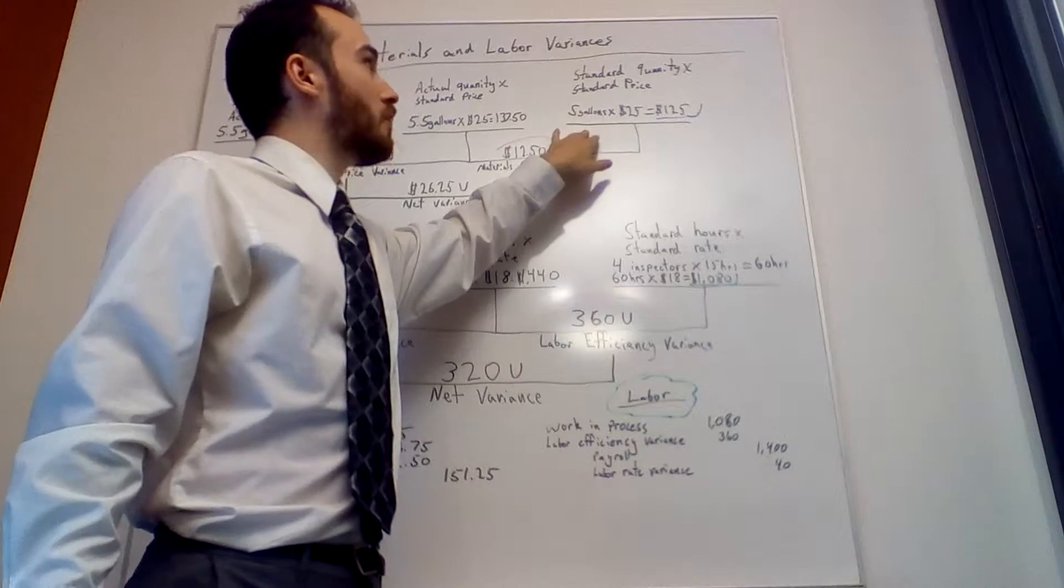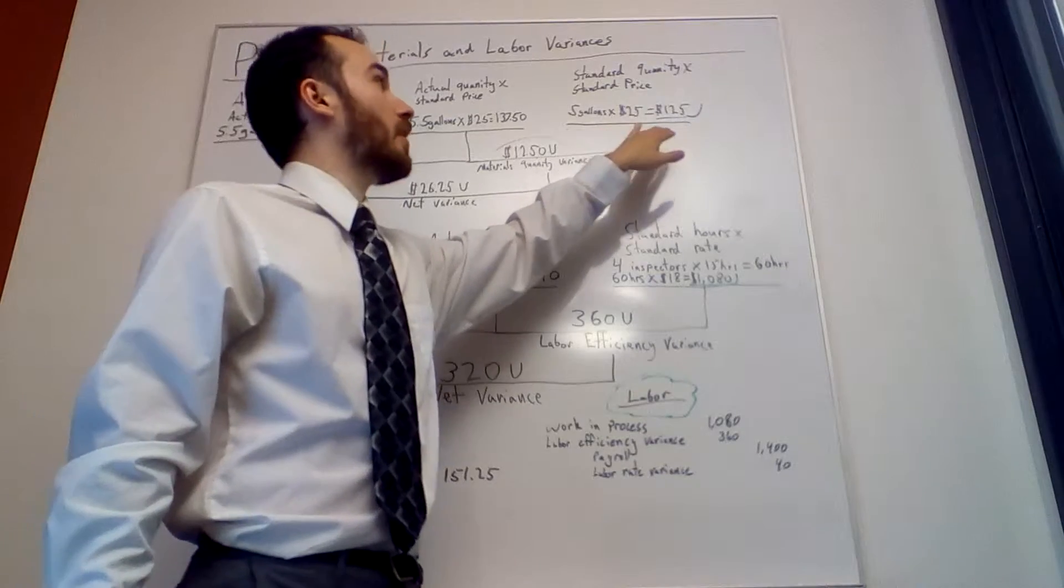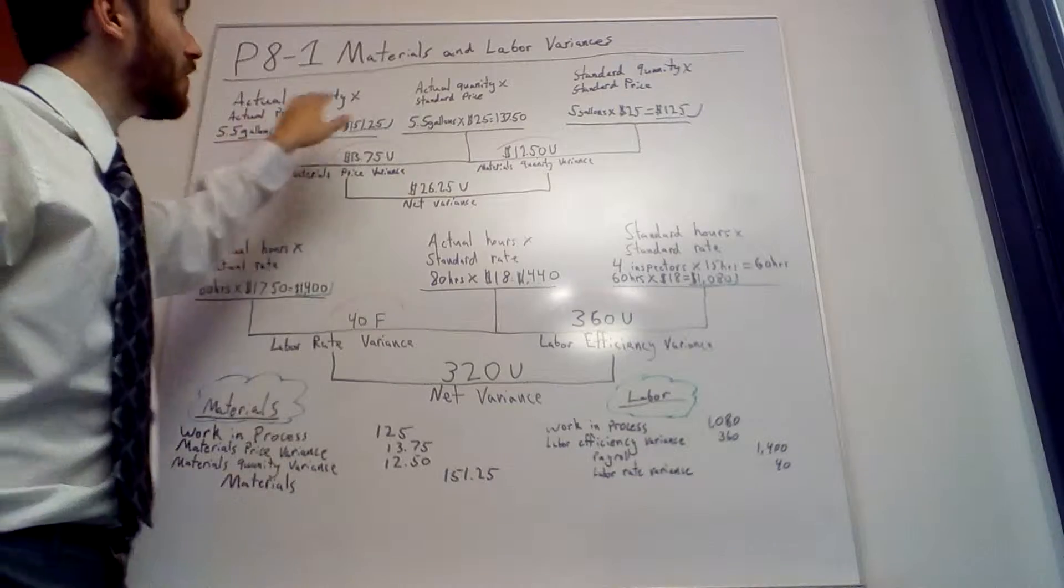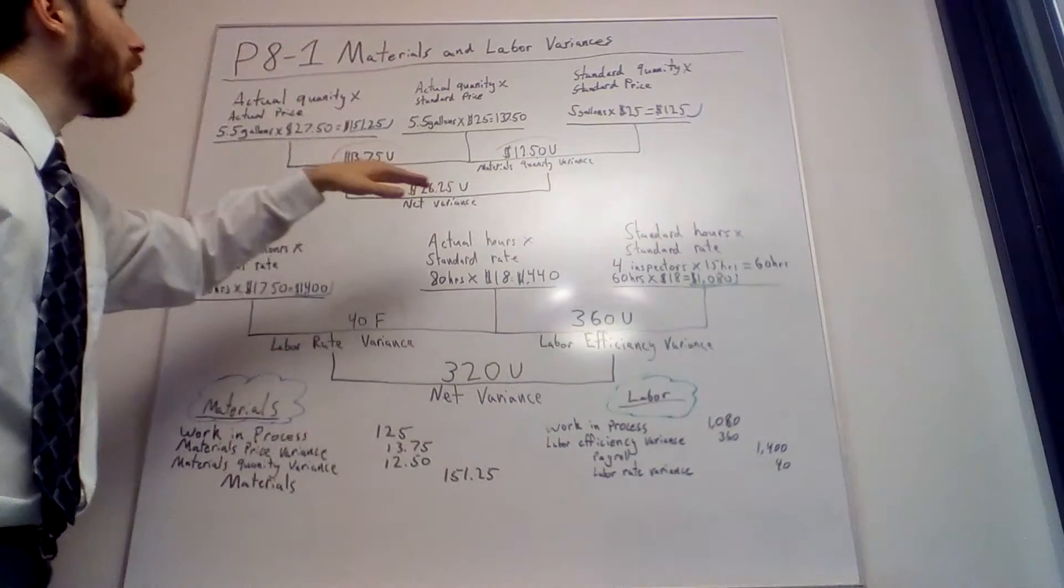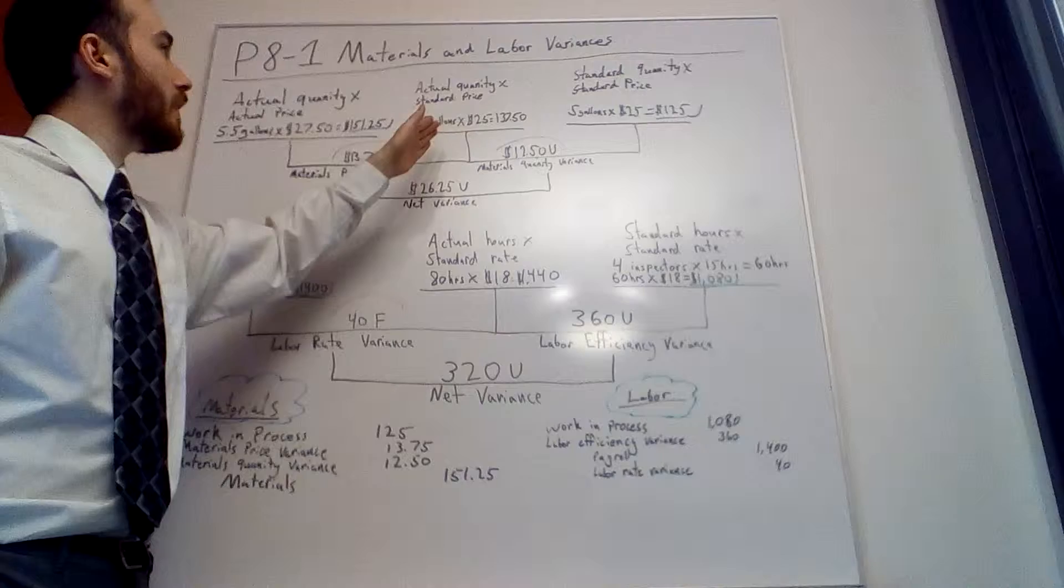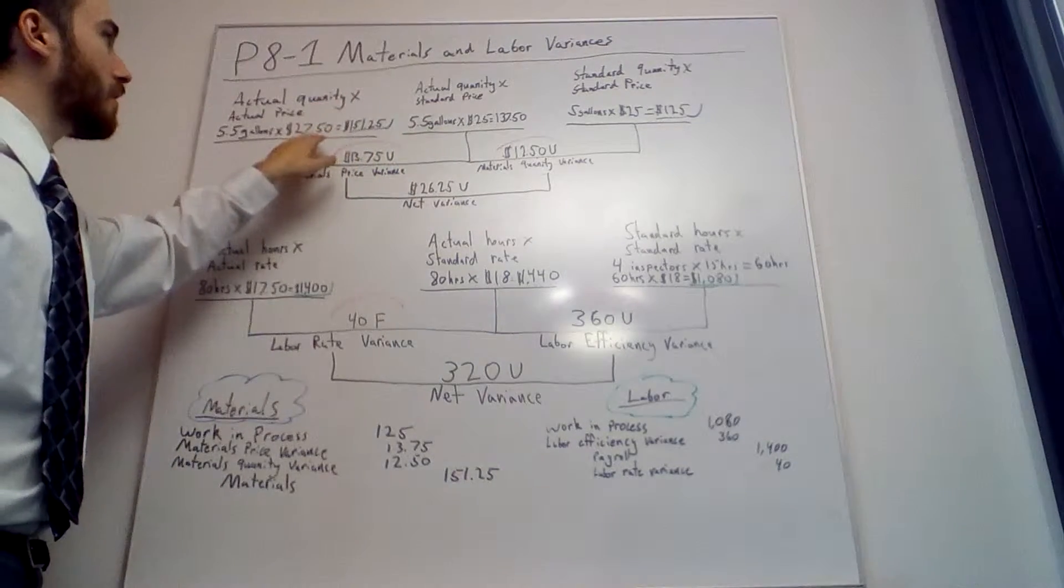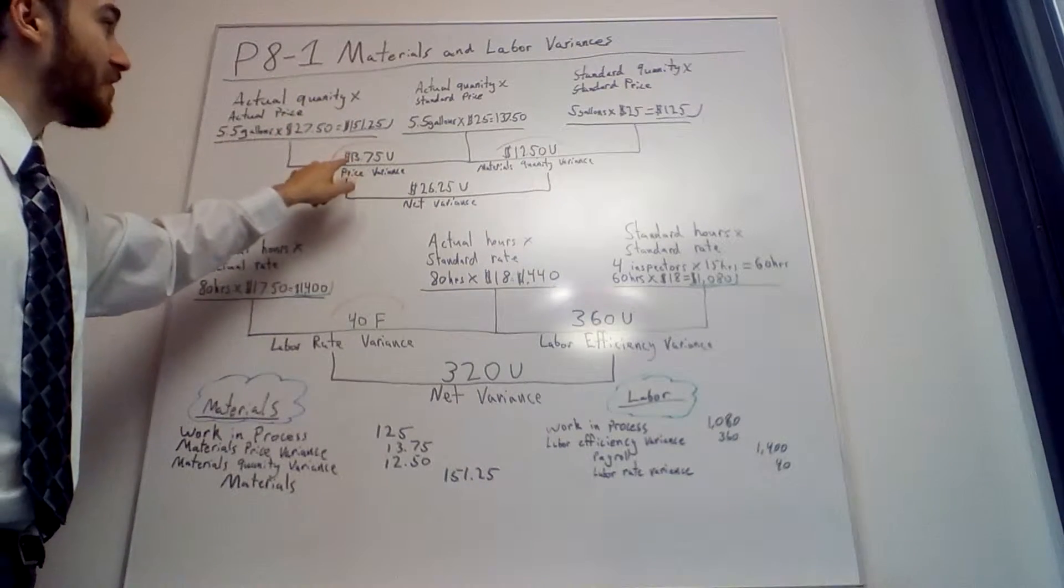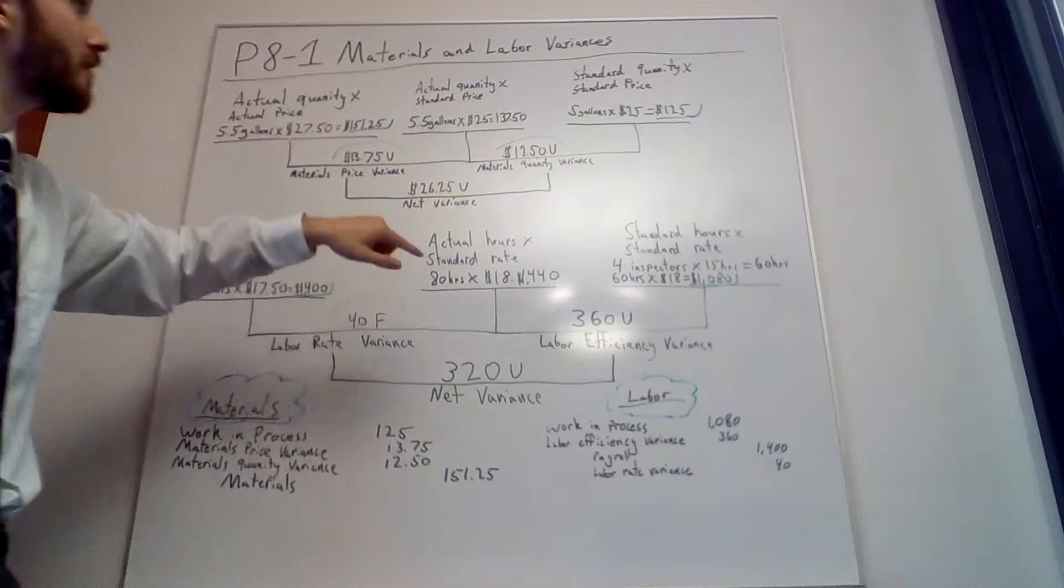Next is the standard quantity times standard price. It should have been 5 gallons at $25 per gallon, which gives us $125. Once you do actual quantity times actual price, actual quantity times standard price, and standard times standard, you have variances. If the left side is higher than the right, it's unfavorable. Here we have $13.75 unfavorable for the materials price variance.